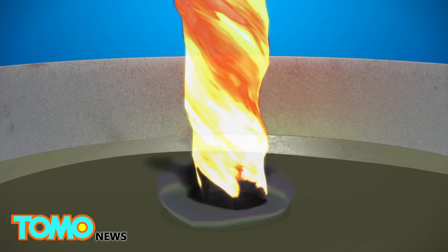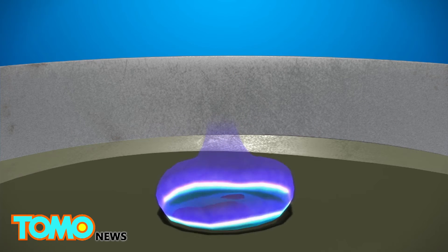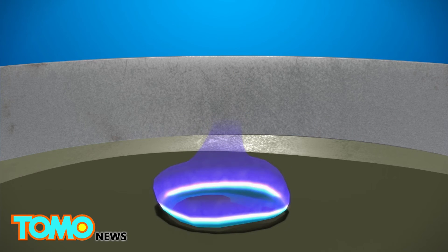To tame the yellow fire tornado, the engineers injected a slow, steady stream of fuel from below. As the flame feeds off the fuel, it shrinks and turns blue.